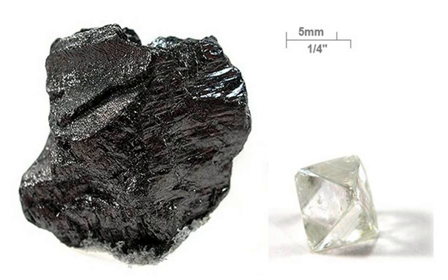The atoms of carbon can bond together in different ways, termed allotropes of carbon. The best known are graphite, diamond, and amorphous carbon.